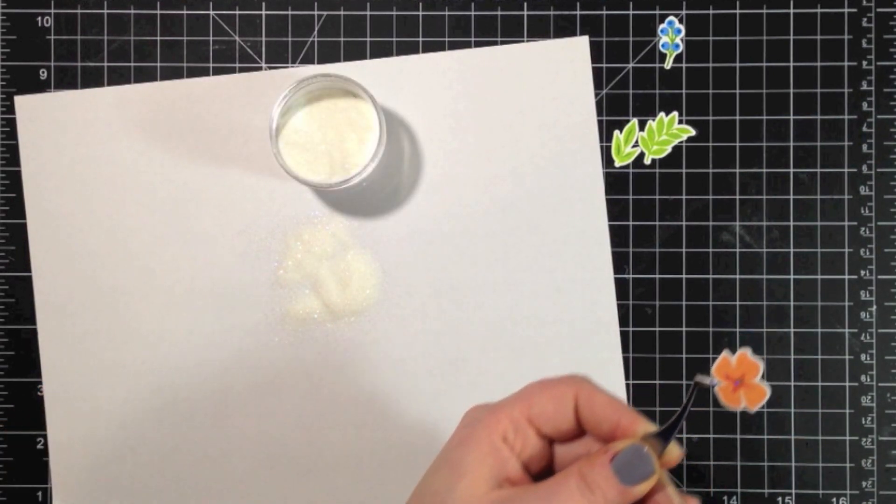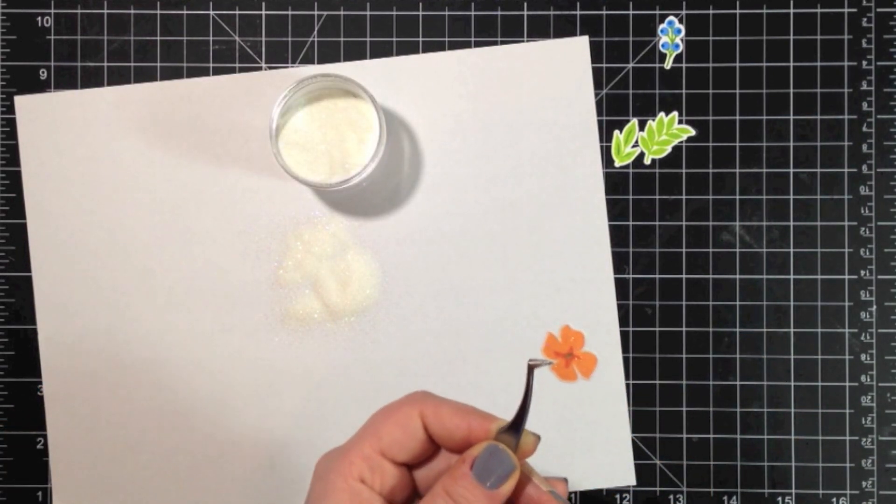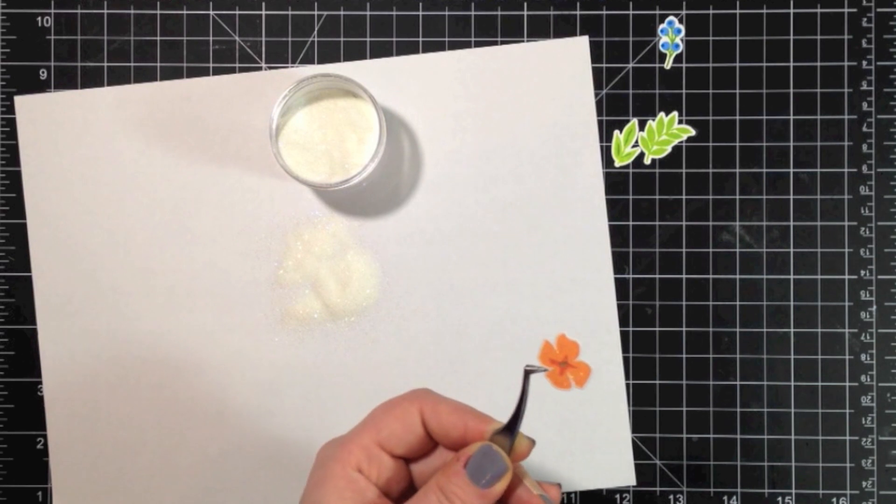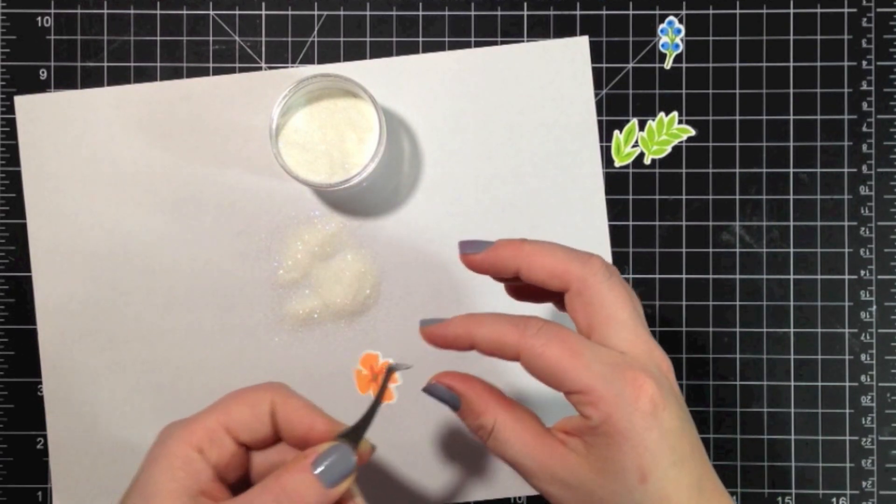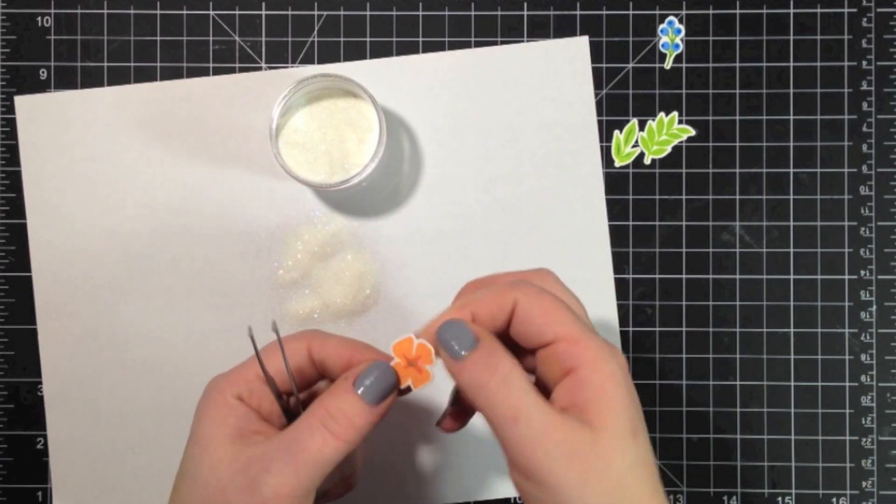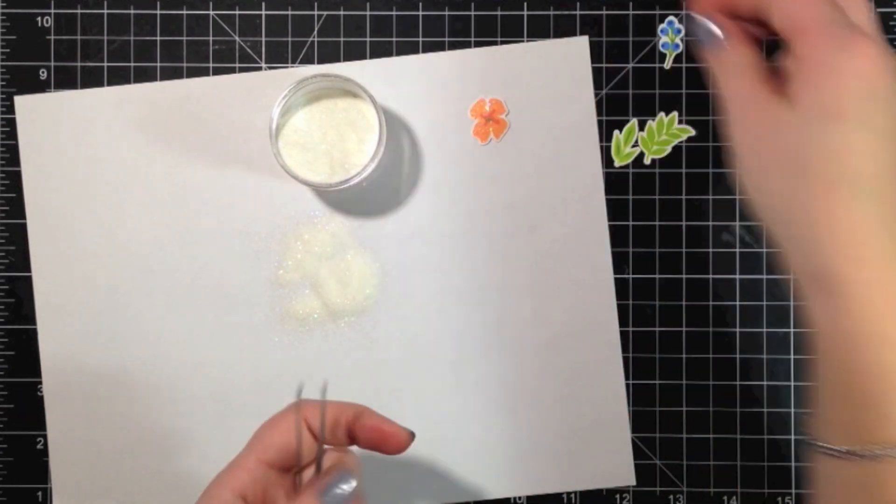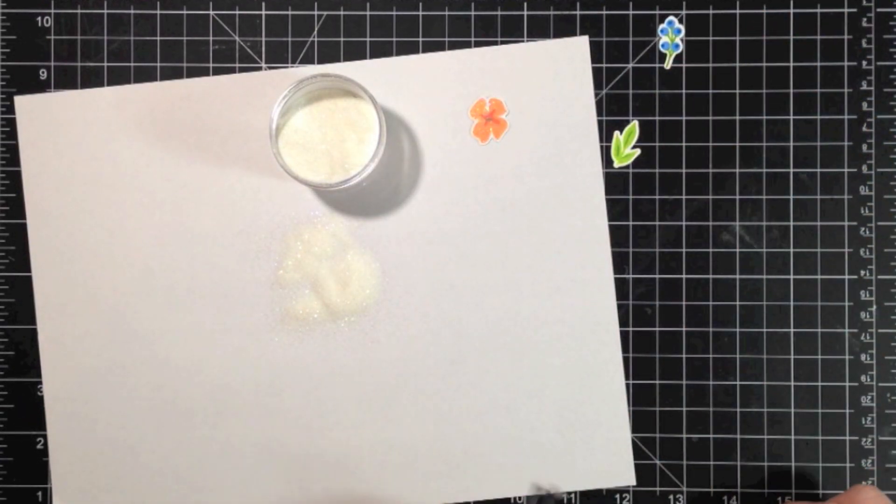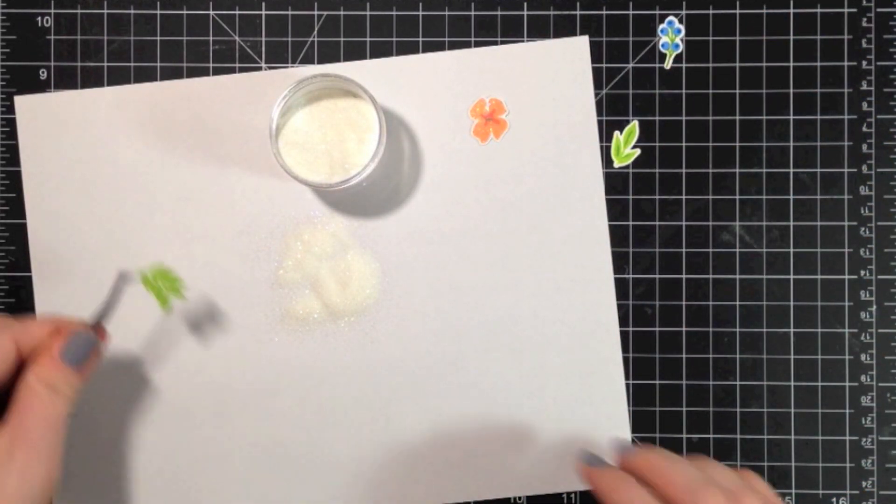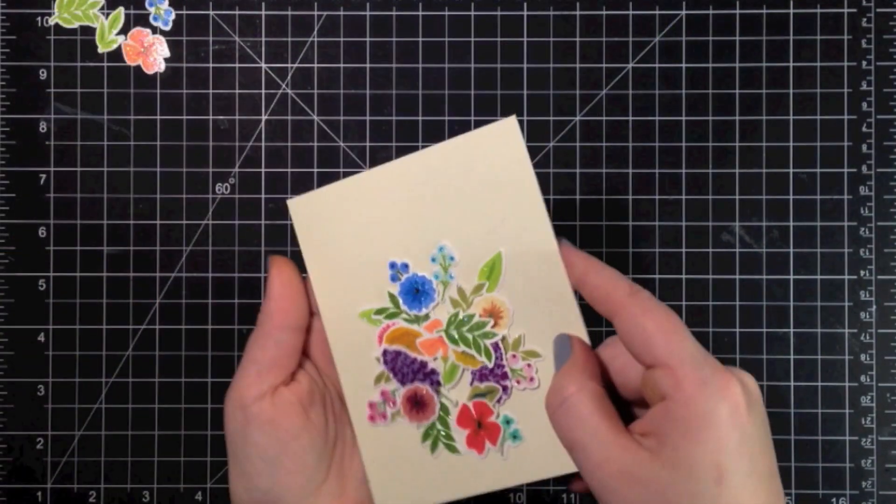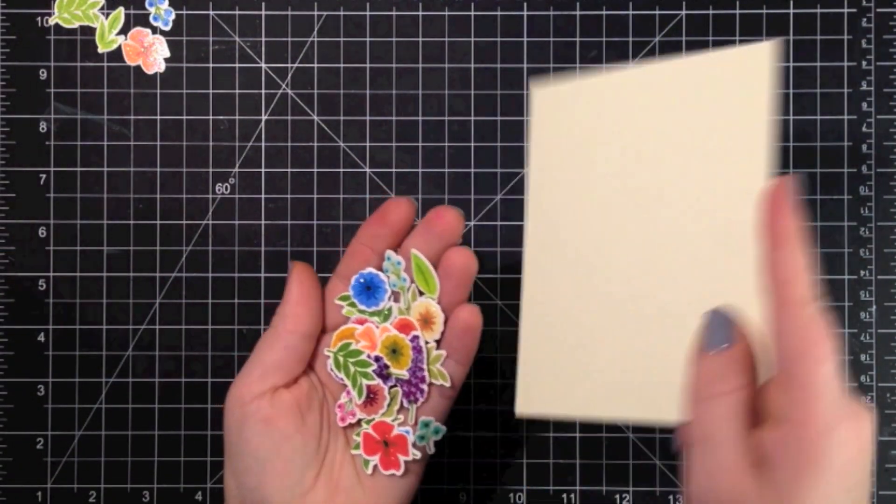Now I've done this before with clear embossing powder, but recently I saw Jennifer McGuire doing it with the sparkle embossing powder and I loved how it looked. So I really wanted to try it with these flower images. I'm using this Judican iridescent sparkle embossing powder. You can see there that once I heat set that on there, I ended up with this really great sparkle.